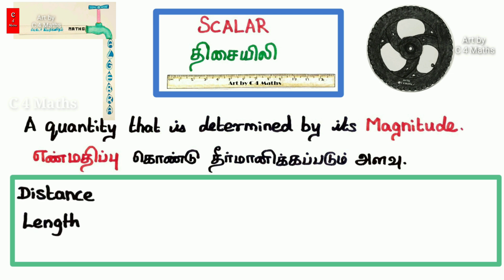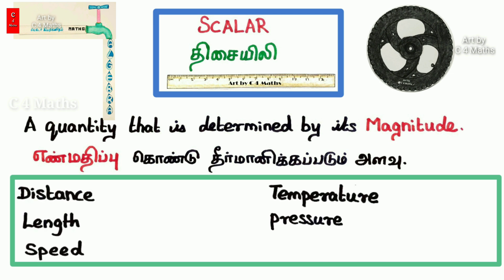Examples of scalar quantities include: distance, length, speed, temperature, pressure, and volume.